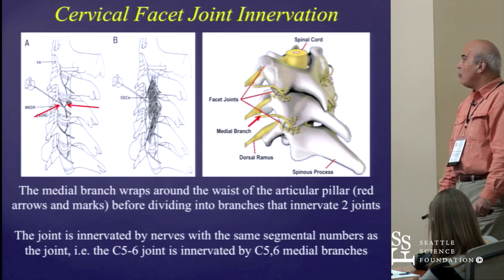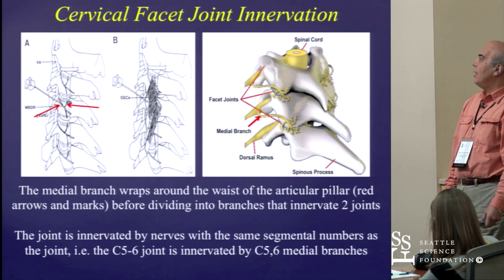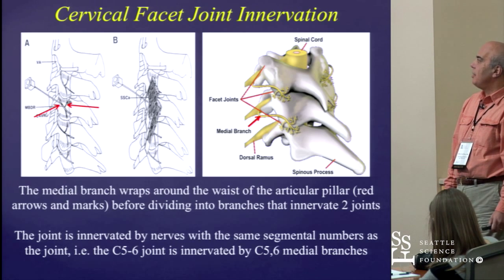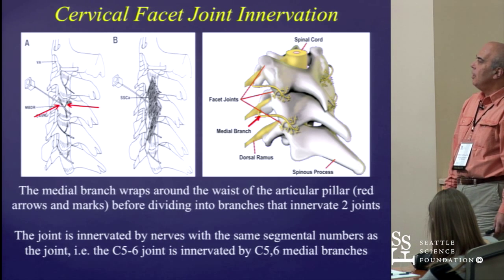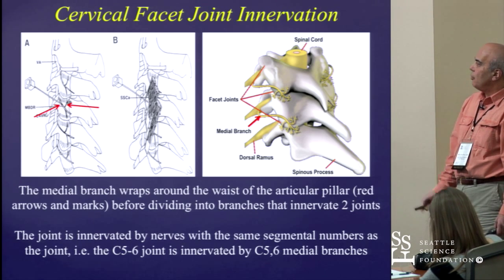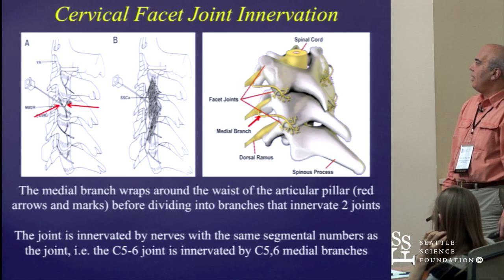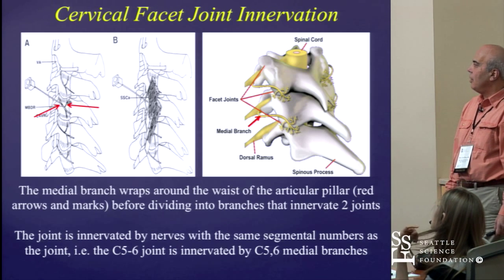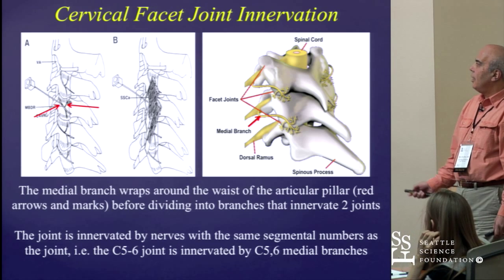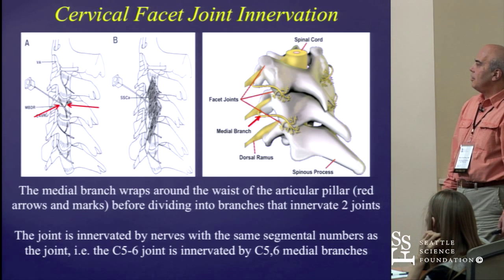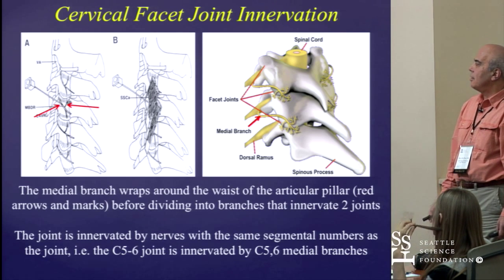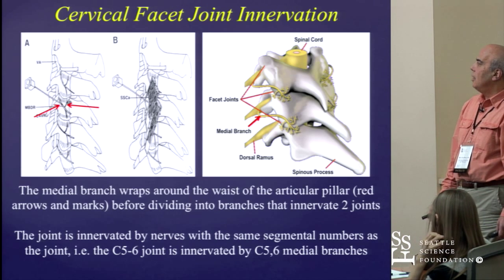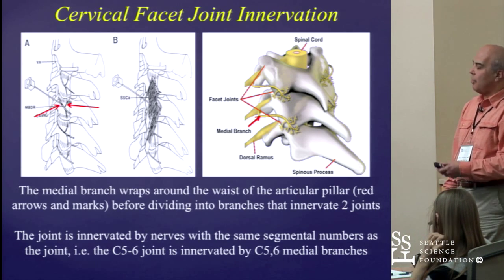The medial branch of the primary dorsal ramus is the basic innervation of the cervical facet joints. They usually wrap around the articular pillar, as shown by the red arrows in these cartoons, before dividing into branches that end up innervating two joints at a time. Each joint is innervated by nerves that have the same segmental numbers as the joint — so the C5-6 joint is innervated by the C5 and C6 medial branch nerves — which is different from the innervation pattern of the lumbar facet joints.